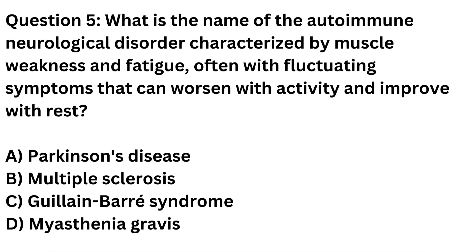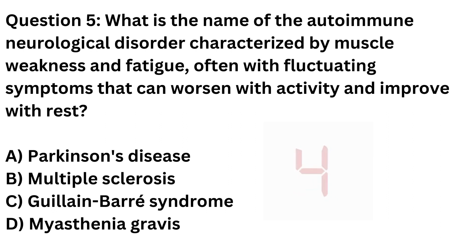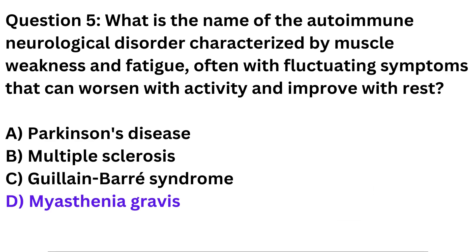Question 5. What is the name of the autoimmune neurological disorder characterized by muscle weakness and fatigue, often with fluctuating symptoms that can worsen with activity and improve with rest? a. Parkinson's disease. b. Multiple sclerosis. c. Guillain-Barré syndrome. d. Myasthenia gravis. Correct answer: d. Myasthenia gravis.